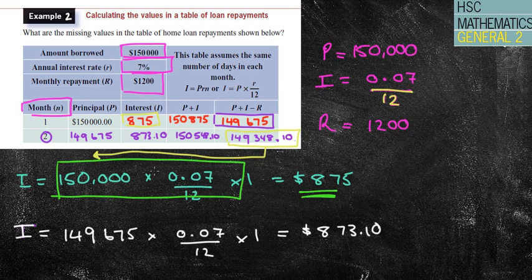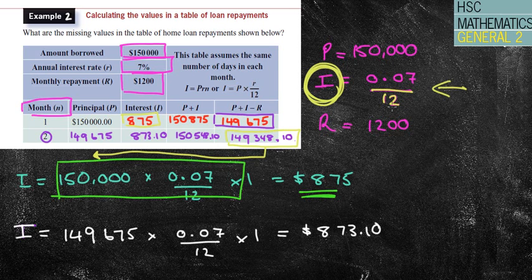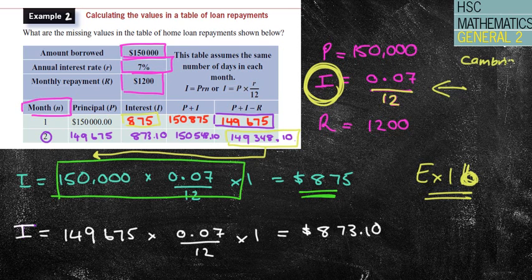That's pretty much your loan repayment tables. They're almost always in the HSC — certainly in the new style HSC. Often multiple choice, but make sure you're familiar with them and mindful of the section where you might fall down, particularly that interest question where we forget to divide by 12. This links in with exercise 1B. We're using the Cambridge textbook at the moment — a fantastic book. If you don't have that, please let me know and I'll sort that out. Have a fantastic day, guys. I hope this was useful — make sure you complete the exercise. Thank you.